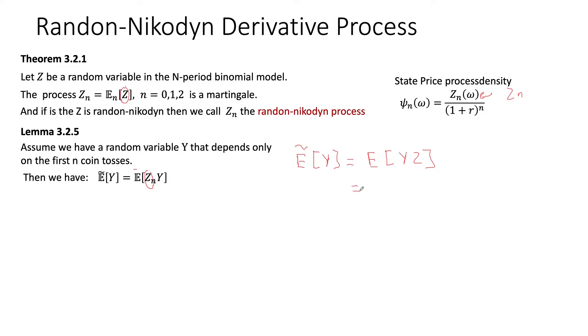And then we can notice that by iterated conditioning, this is the same thing as the expectation as of time n of the random variable Y times Z. This is the same thing. But now, Y depends only on the first n coin tosses. So when we stand at this time period, we already know exactly what Y is. So we can take out what is known. So that is the same thing as Y times the expected value as we stand at time n of Z. And obviously, by definition, this is nothing but Z_n. So that is the expected value of Y times Z_n.